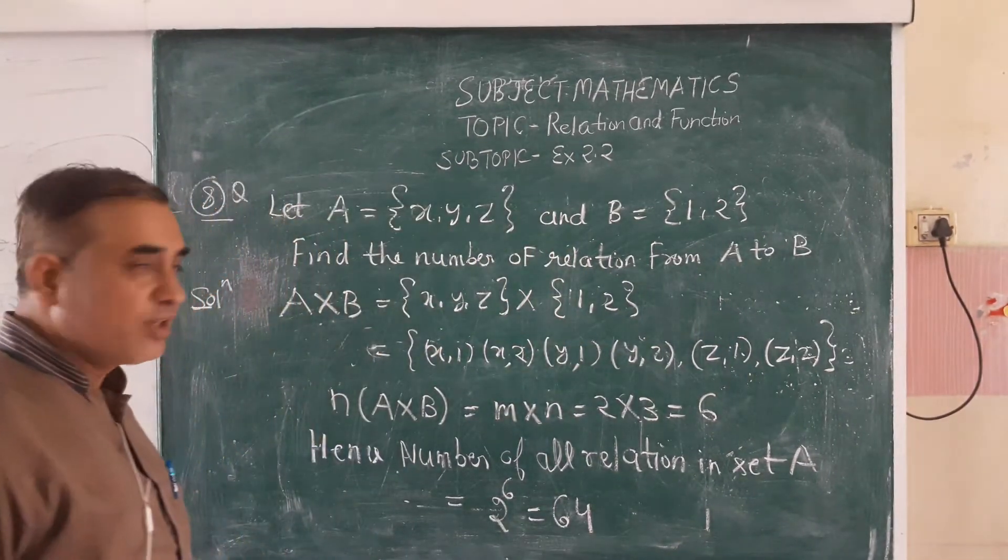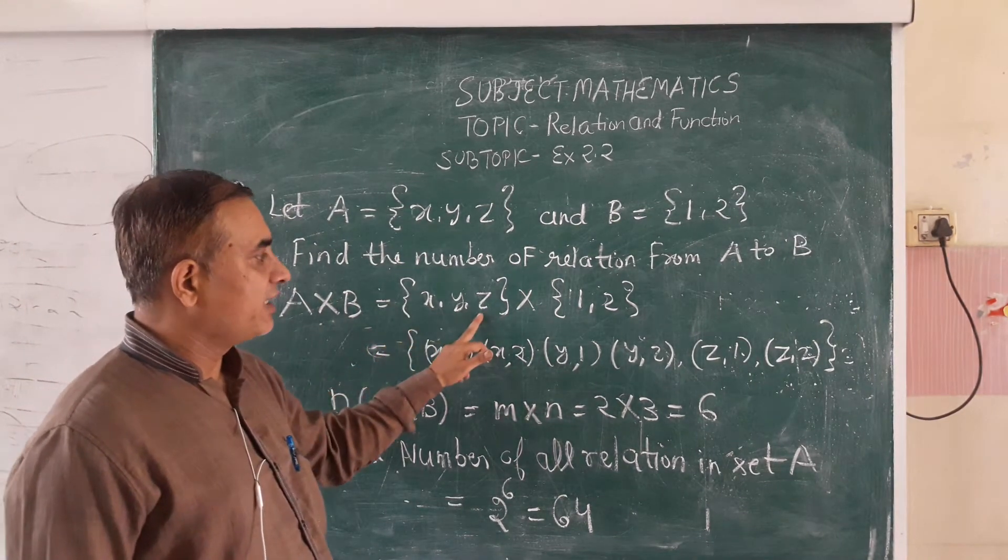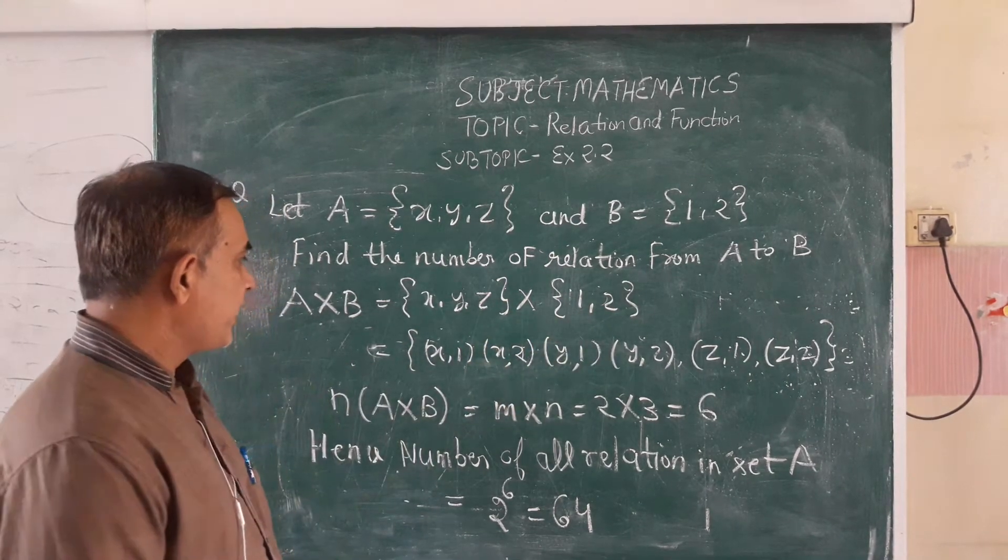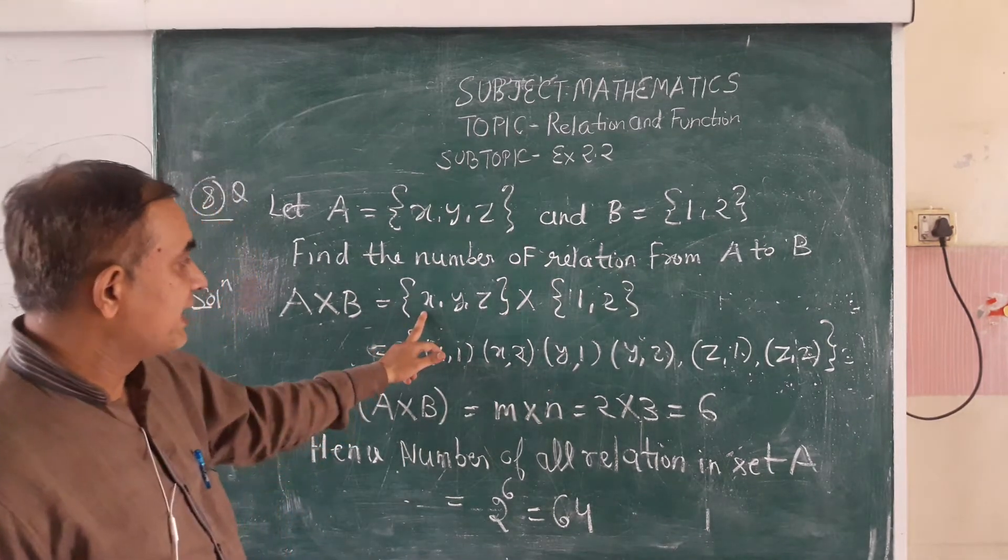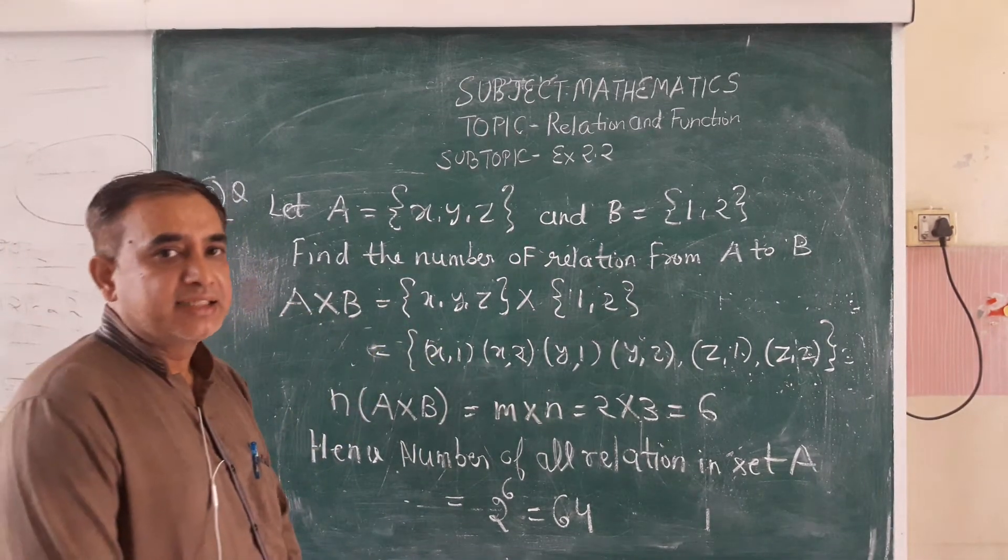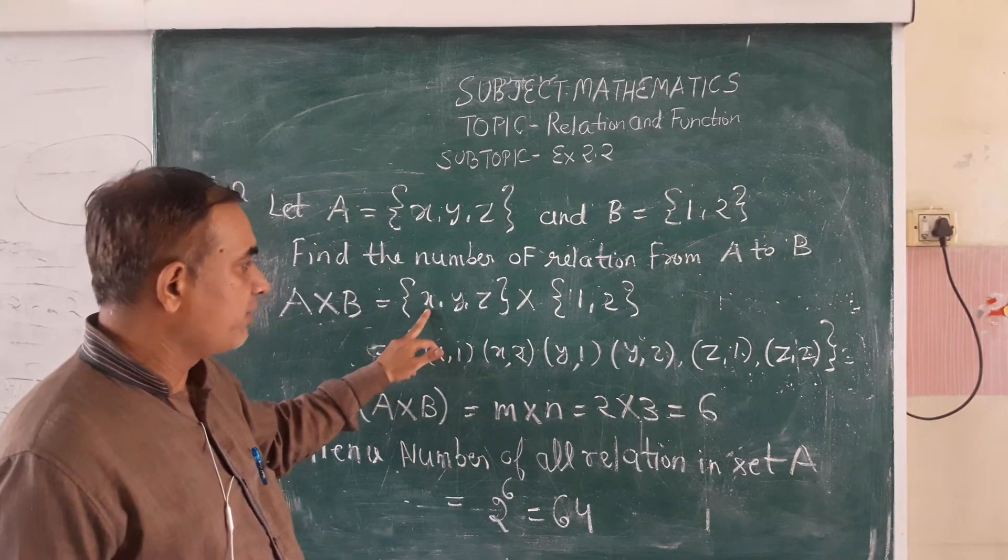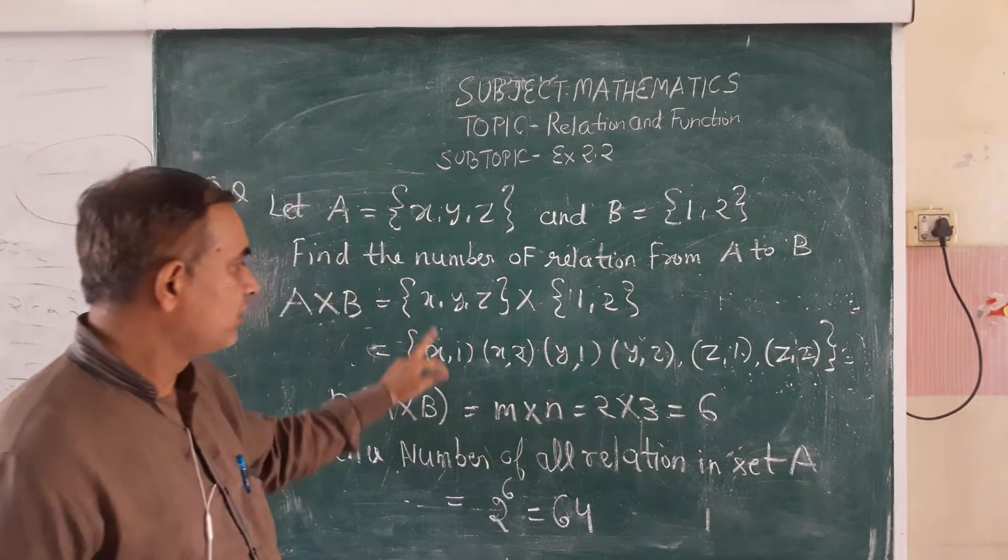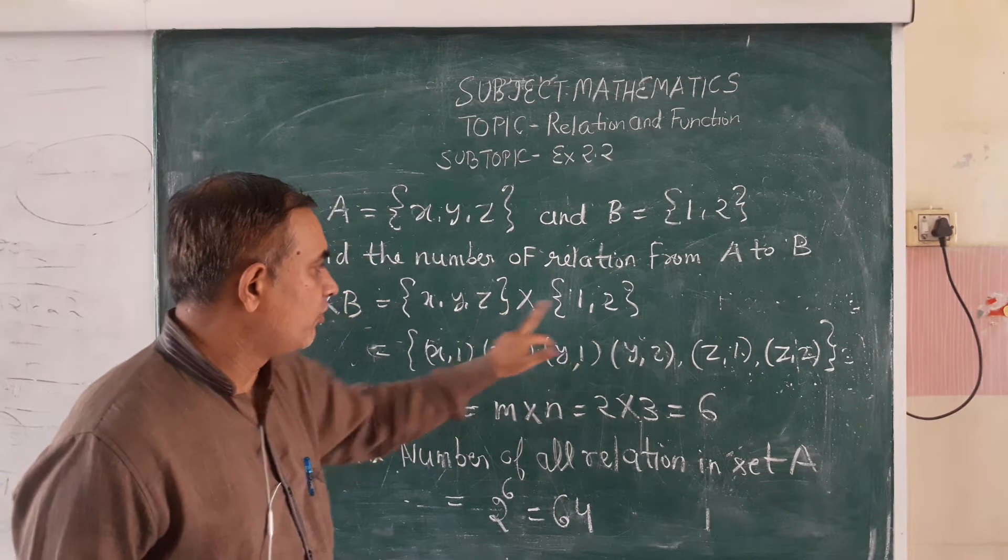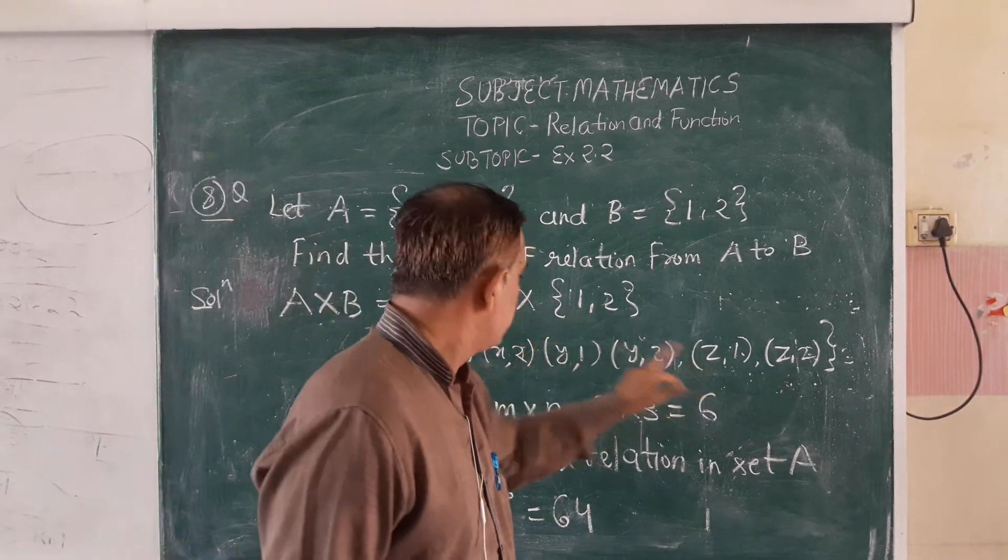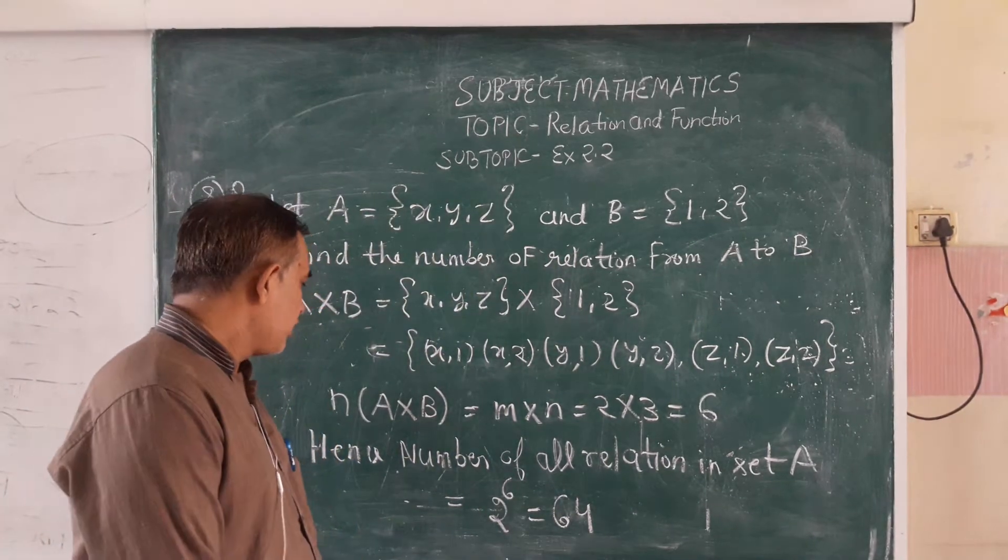First, we find A cross B, which means x, y, z cross 1 comma 2. We take the element of A in the first position and the element of B in the second position. The ordered pairs become x comma 1, x comma 2, then y comma 1, y comma 2, and similarly z comma 1 and z comma 2. These are the ordered pairs which are A cross B.